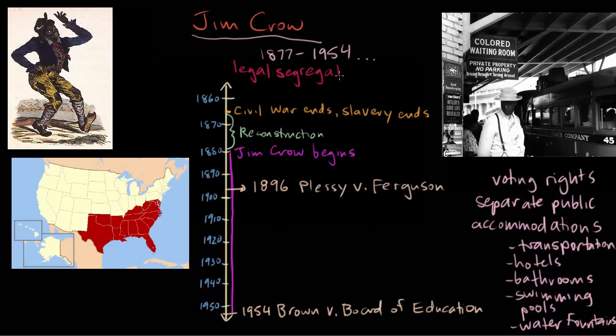So where did this system of Jim Crow come from? Well, let's start with the name. Jim Crow was not the name of a specific person — actually, Jim Crow was the name of a stock character. A stock character is a basic, well-known character, usually in a comedy.